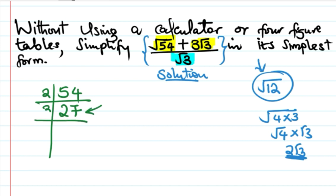Let's try 3. 3 goes into 27 and gives us 9. And 9 is a square number. So 9 can be written as 3 times 3.